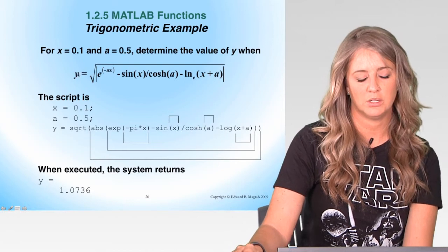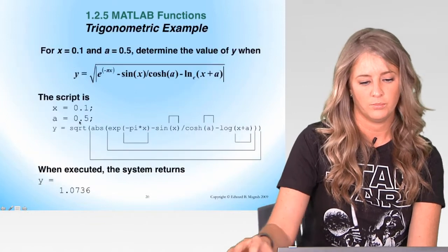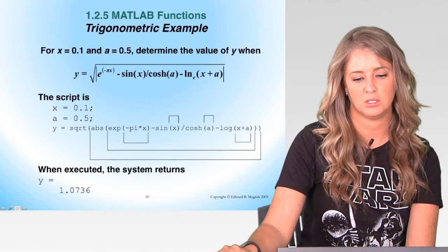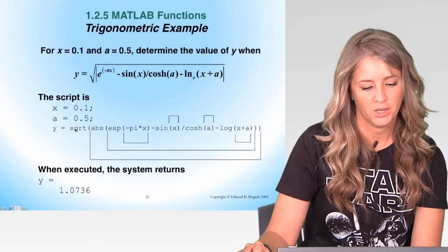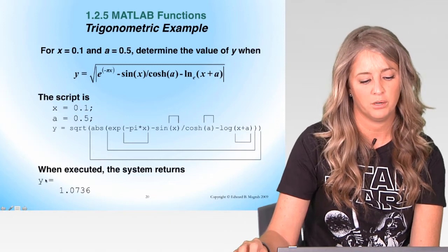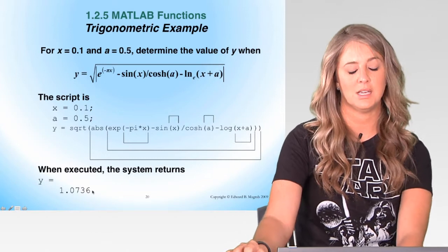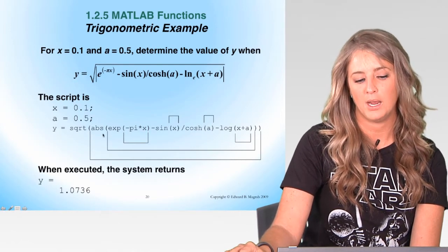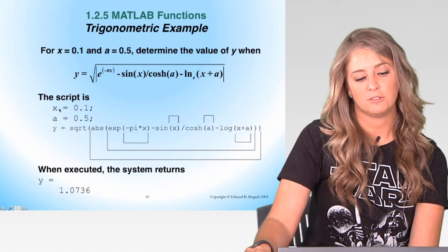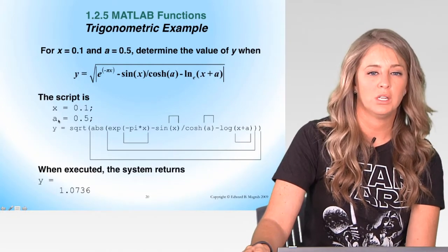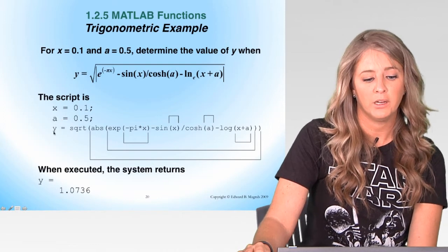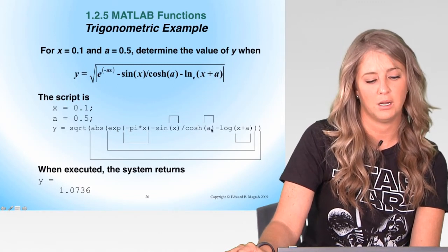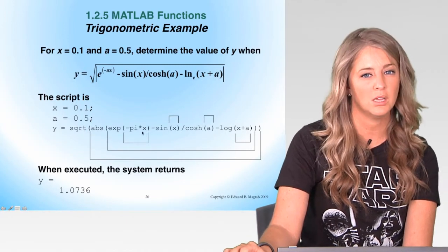Here's an expression to try using the trigonometric functions. Let x equal 0.1, a equal 0.5, and y equal a given expression. When you type this into MATLAB, you'll receive the output y equals 1.0736. An important thing to note: x and a are used within the expression for y. Before you can execute y, you need to define what x and a are. MATLAB executes code from top to bottom, so if you define y before a and x, you'll receive an error that x and a are undefined.